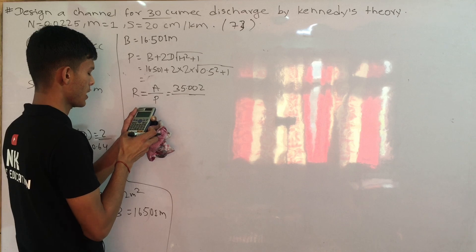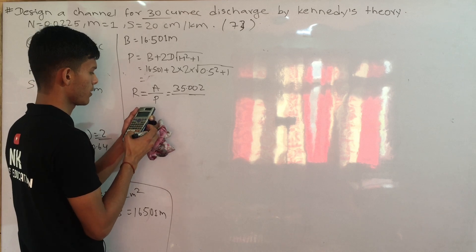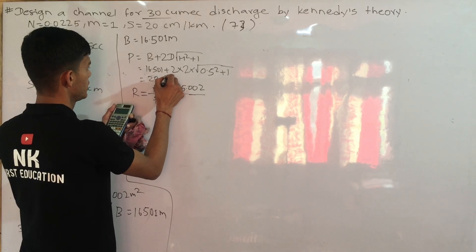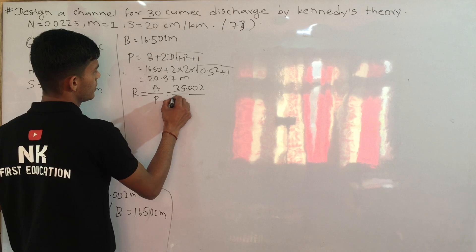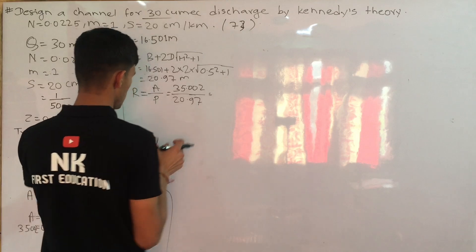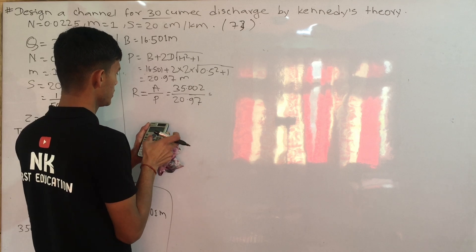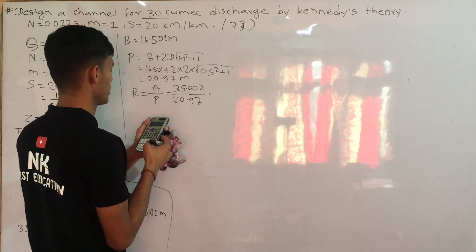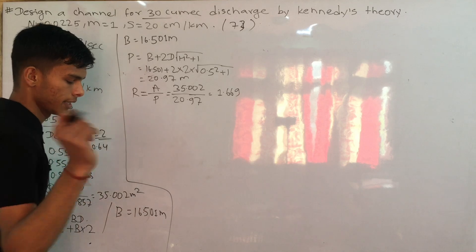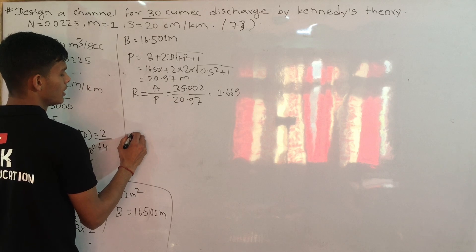16.501 plus 2 into 2 into root under (0.5 squared plus 1). The perimeter is 20.97. L1 is 25.002. L2 is 319. Perimeter equals 20.97.